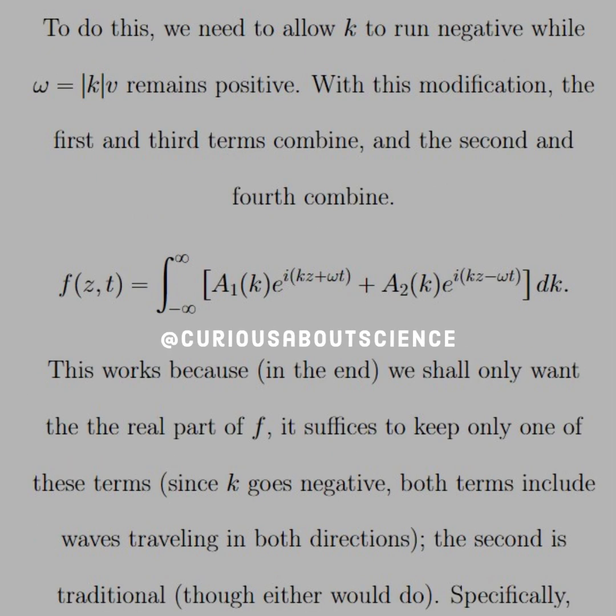To do this, we need to allow k to run negative while ω = |k|v remains positive. With this modification, the first and third terms combine, and the second and fourth terms combine. So f(z,t) = integral from -∞ to ∞ of [A₁(k)e^(i(kz+ωt)) + A₂(k)e^(i(kz-ωt))]dk.